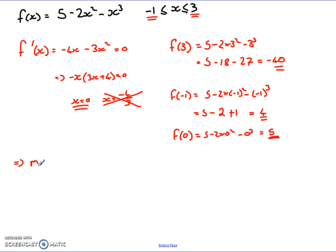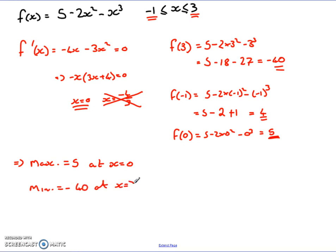Communicating the answer: our maximum equals 5 and that occurs at x = 0, and our minimum equals -40 which occurs at x = 3. Remember, the final stage of communicating your answer is vital — you have to do that to make sure you get those final marks.